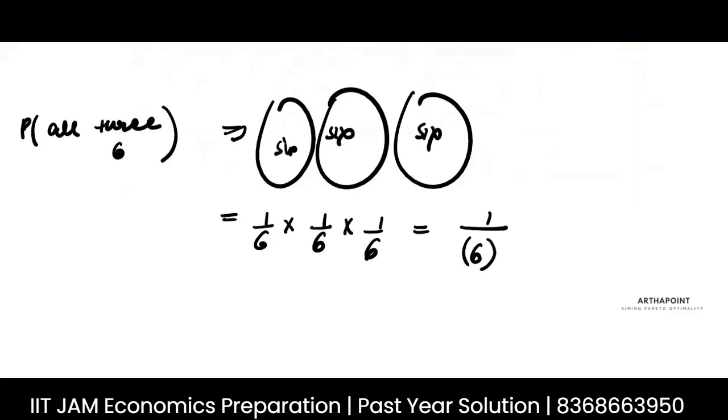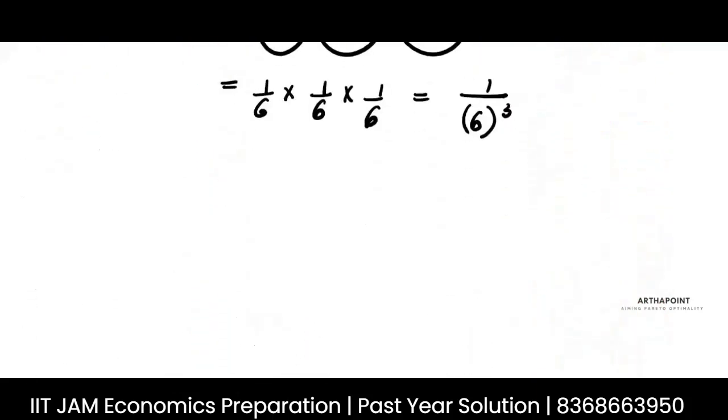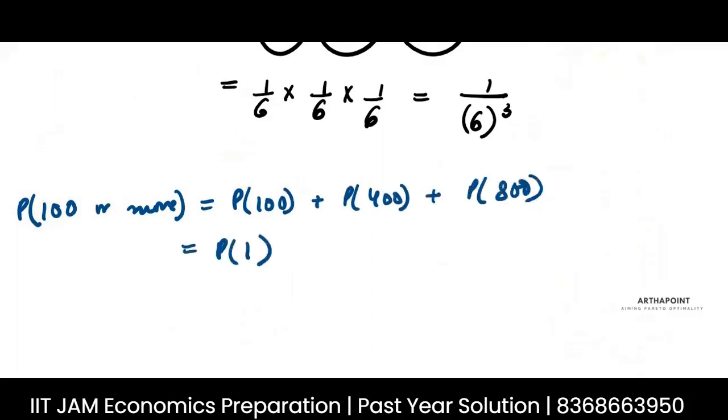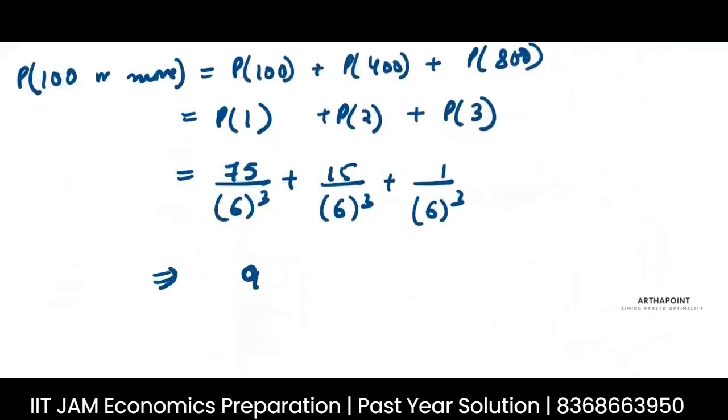This is again 1 by 6 cubed. This was 5 into 5, 25 into 3, 75 by 6 to the power 3. Plus the other one will be 15 by 6 to the power 3 plus 1 by 6 to the power 3. So this would be 91 by 6 to the power 3.